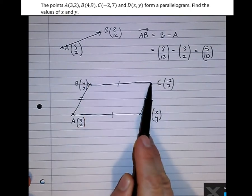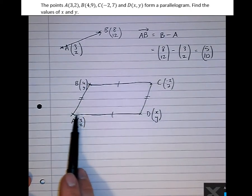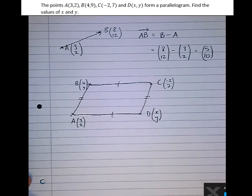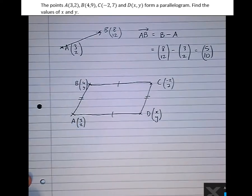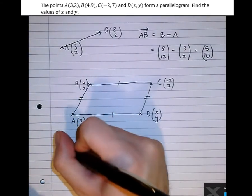Well we know that from B to C is exactly the same set of directions as A to D. We know that because it's a parallelogram. We know that the sides are of equal length and go in the same direction. So let's find out what BC is.